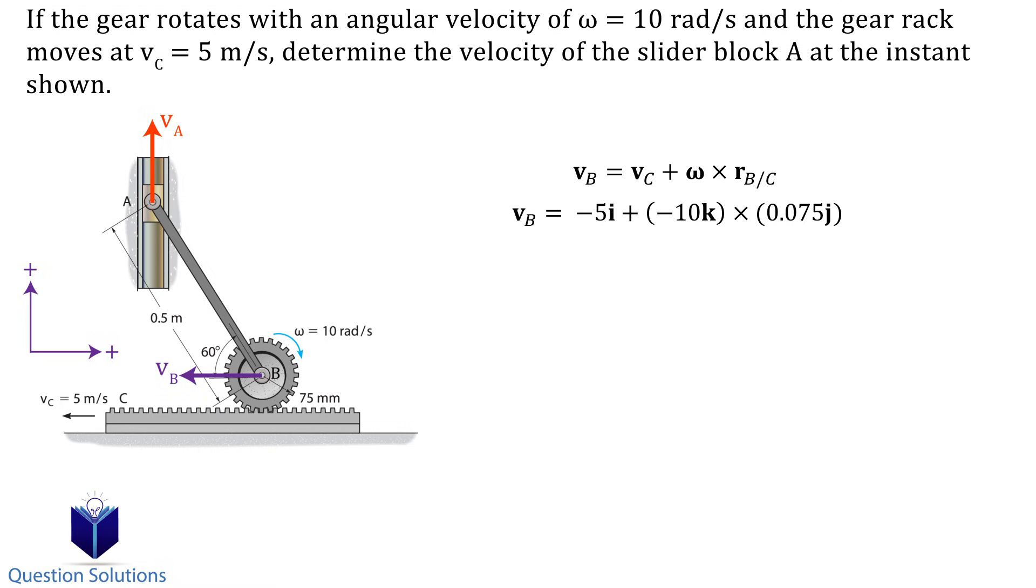Let's go through these values. So we have the velocity of the rack, which is to the left, in the x axis. So it's negative 5i. The wheel is spinning clockwise at 10 rads per second, so it's negative, and then the position vector from C to B is the radius of the wheel, which is straight up from the point of contact to pin B, and that's 0.075j in meters. We can solve this equation. First we do the cross product, and then we can add the i components together. This answer tells us that point B has a velocity of 4.25 meters to the left.